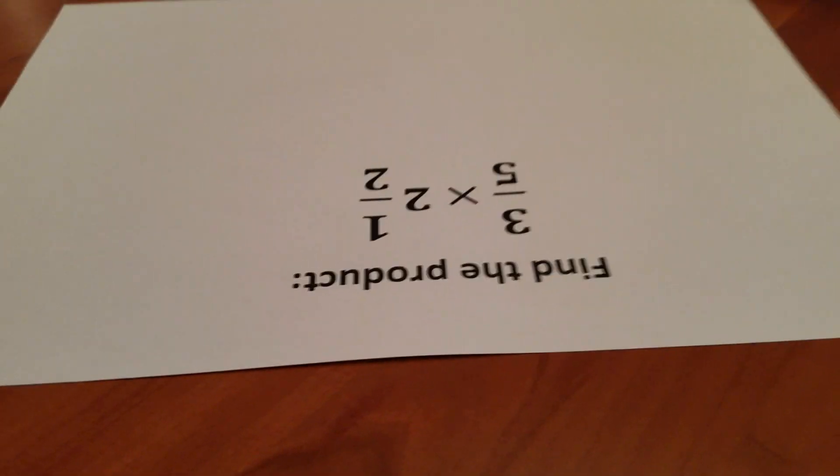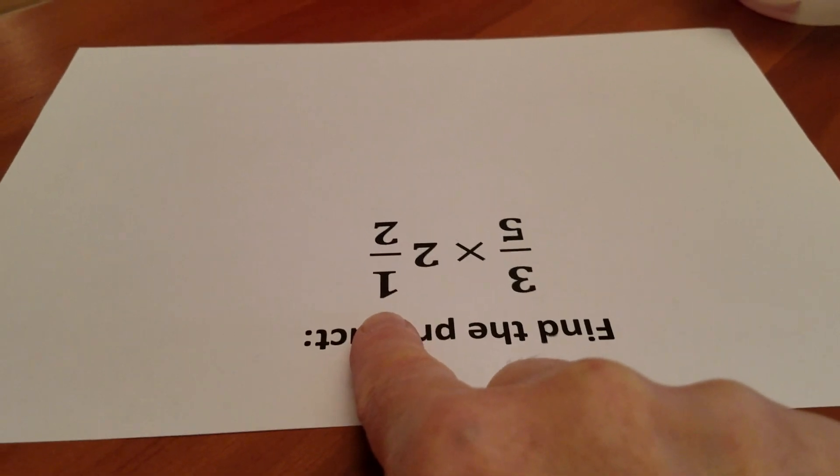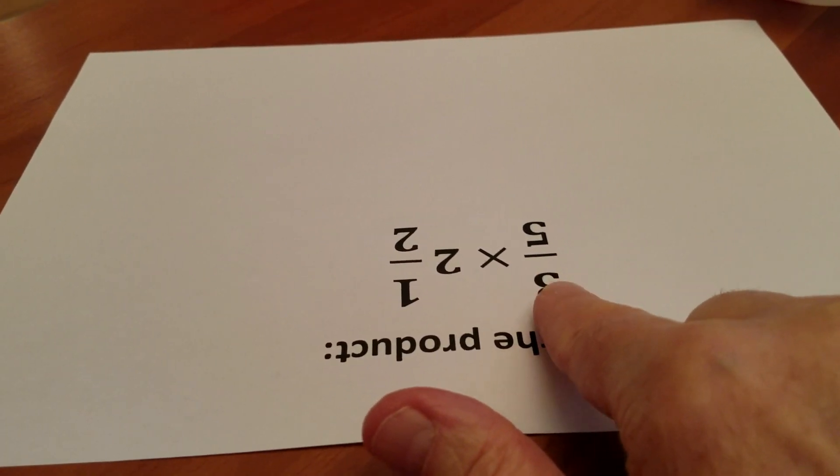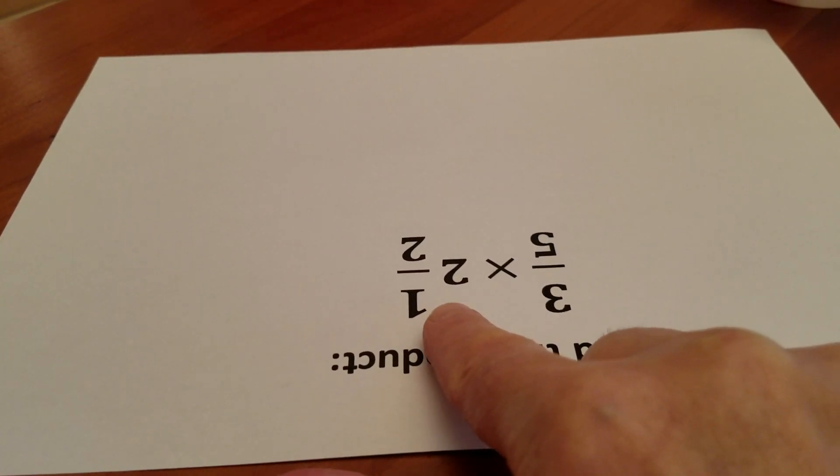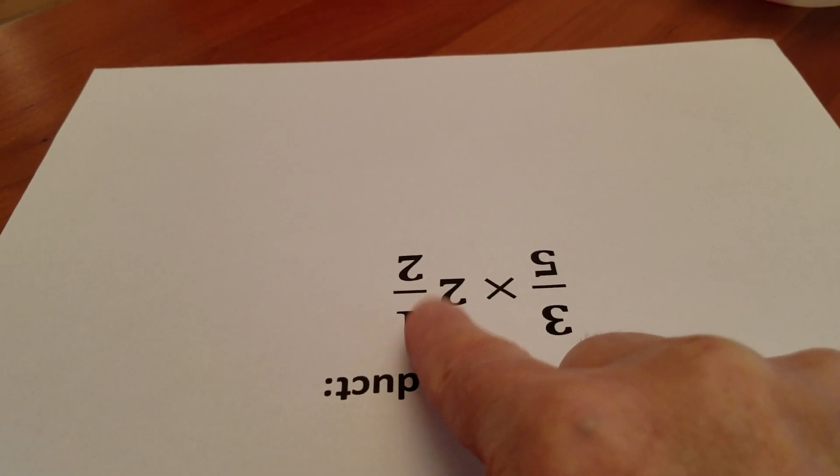I need to find three-fifths of two-and-a-half. Three-fifths is the multiplier and two-and-a-half is the multiplicand. We always begin with the multiplicand.